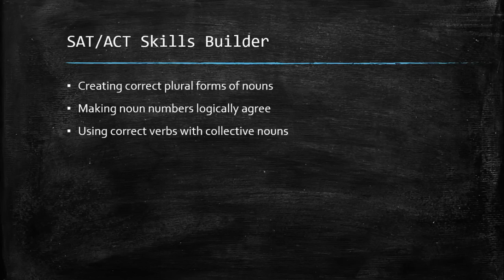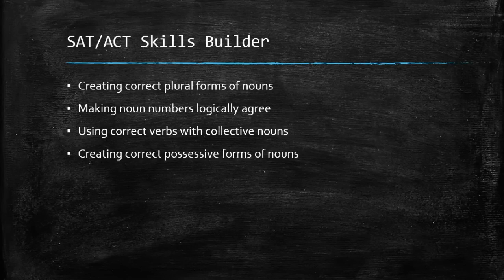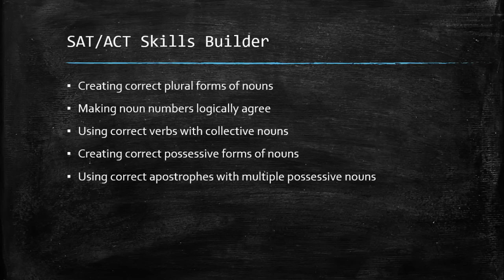Using correct verbs with collective nouns, depending on whether the collective noun is identifying the group acting as a whole unit or identifying just the different members of the group acting individually. Creating correct possessive forms of nouns. And finally, using correct apostrophes with pairs or trios, or with multiple possessive nouns in the same phrase.